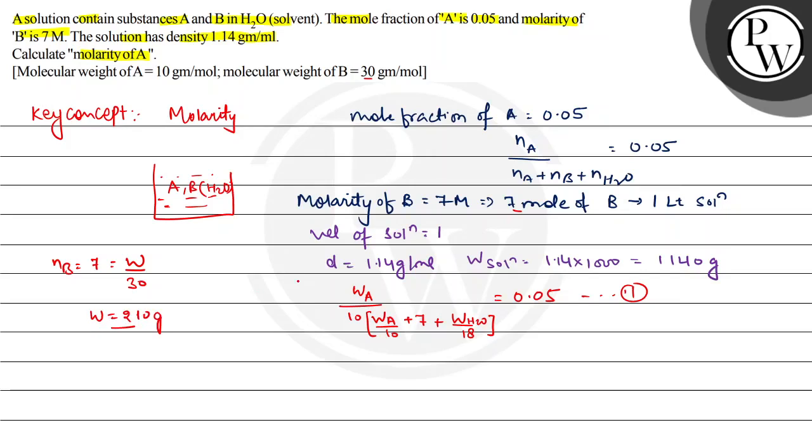Number of moles of A, its fraction is 0.05. And if we talk about weight of solution, 1140 minus weight of B, weight of B is 210 gram. This gives weight of H2O plus weight of A equals 930 gram. This is the second equation.